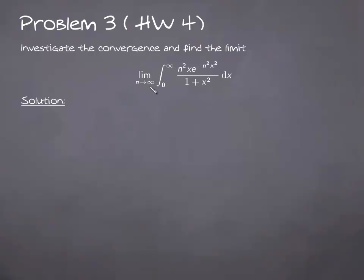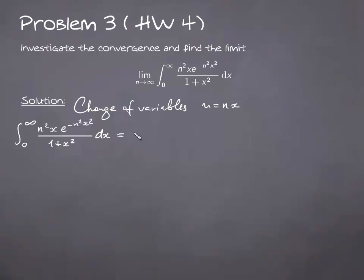Again, we'd like to compute the limit of integrals. Clearly the first step is to get rid of n, which can be done by applying a change of variables. Let u equal n times x. In this case the integral becomes an integral from 0 to infinity, and now we have u times e to the power minus u squared divided by (1 + u/n) squared, du.